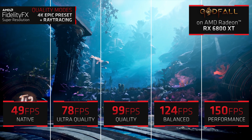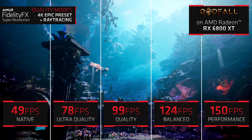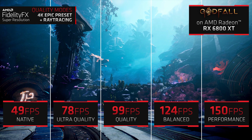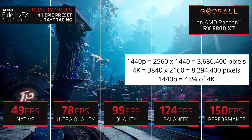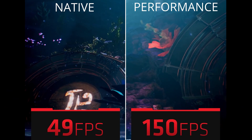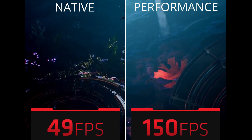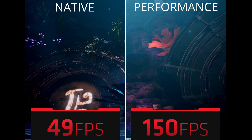FSR has four quality settings, not including native, so gamers can pick an option to boost performance. FSR looks like it boosts performance better than traditional upscaling, so a good test later would be comparing 1440p upscaled to 4K against the 4K FSR quality setting, seeing as you get twice the performance with the quality setting and 1440p is about 43% of 4K pixels. Between native and performance mode, you can clearly see that native is far sharper — don't expect too much when you're getting three times the performance.